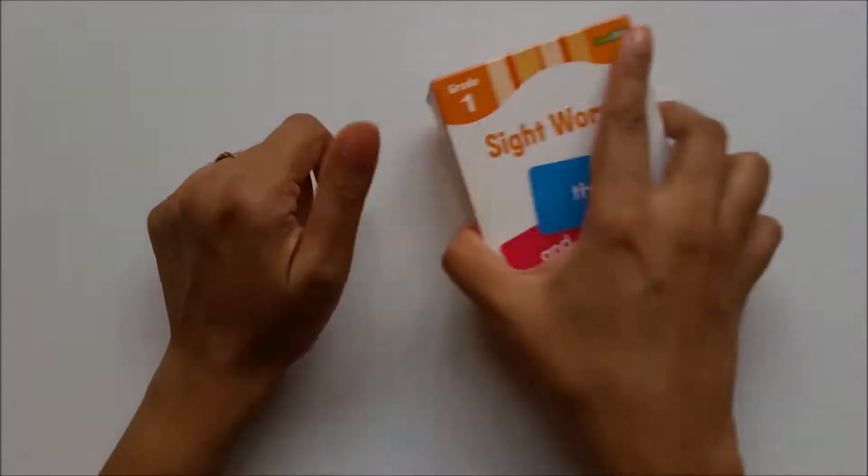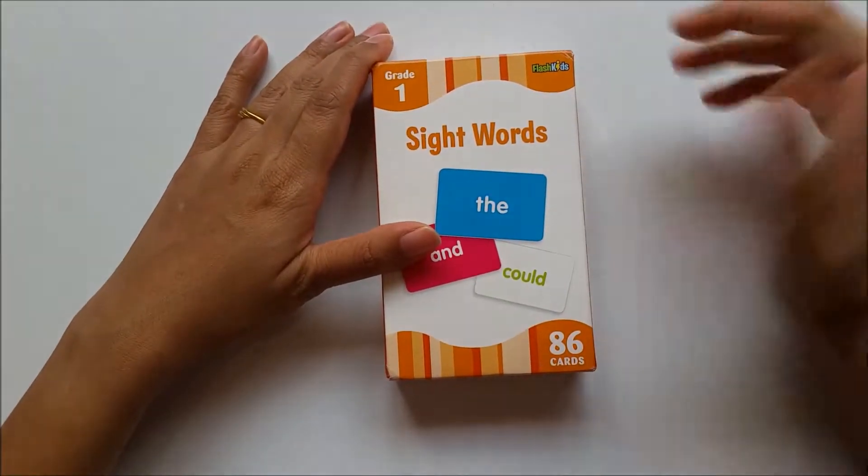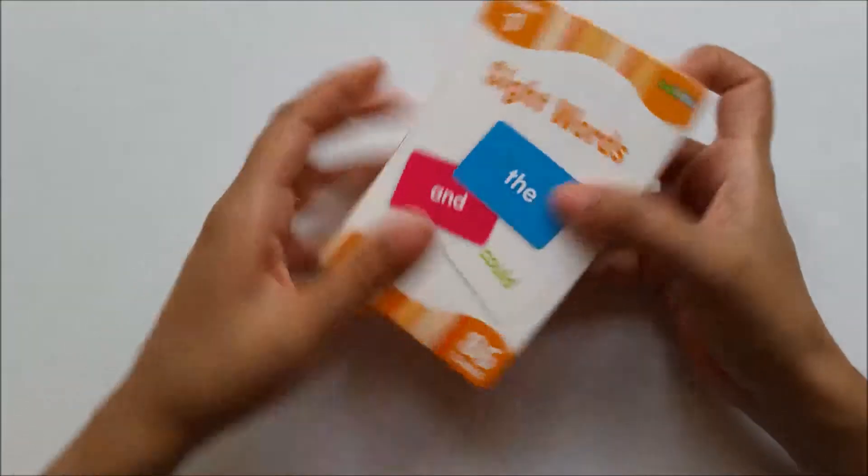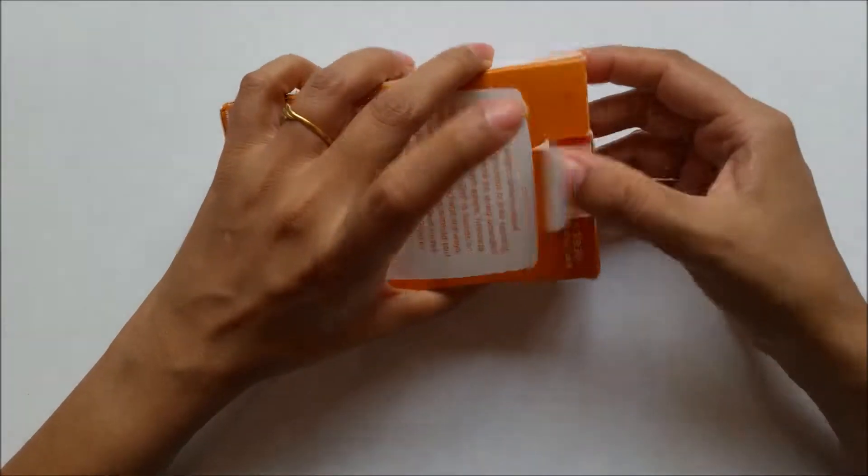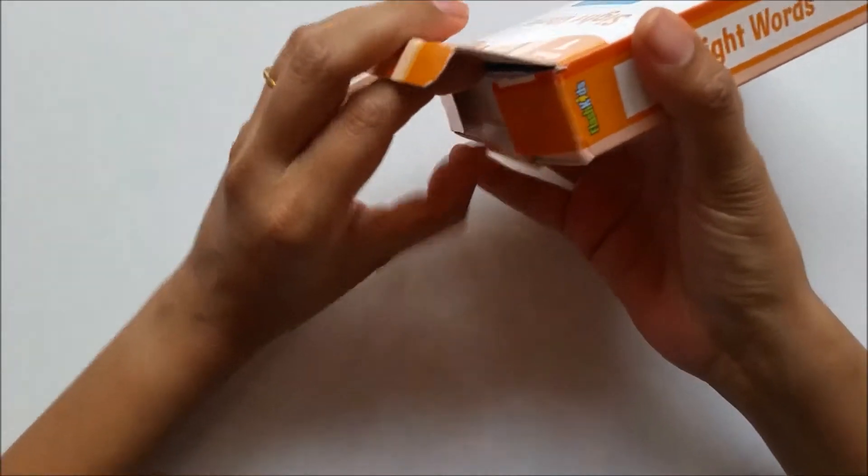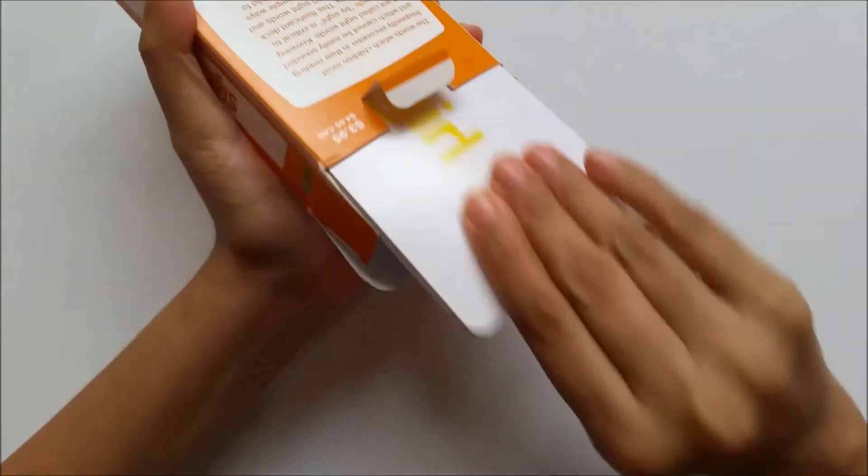Okay, another set of flashcards is these sight words. This too is a grade 1 set by the same company, same cost. This is also available on Amazon dot in. The difference between this set and the previous set is this one consists of one word per flashcard, and these include all types of words like two-letter words or three-letter words, etc. As you can see...